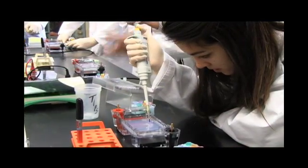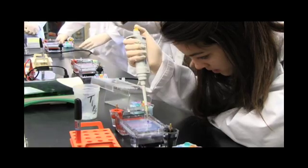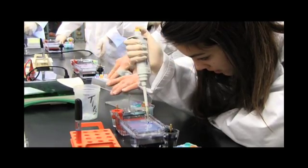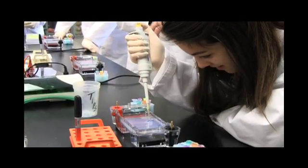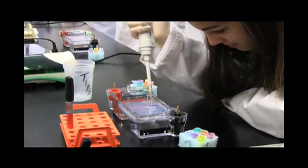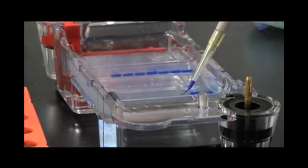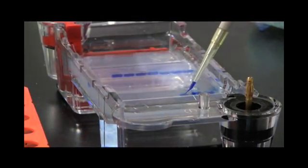The first well is the ladder—our control. This is a DNA sample that's already been cut into many pieces. In lane two you'll put your crime scene sample, and then in lanes three through seven you'll load your suspects. Lane eight will stay open.